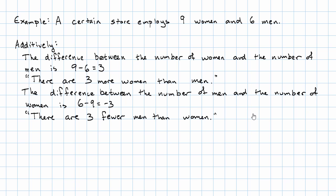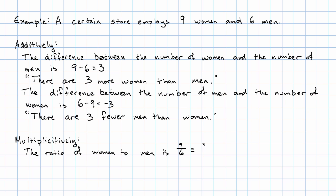How would we describe this multiplicatively? We would say that the ratio of the number of women to the number of men is the number of women over the number of men. Simplifying that fraction, this is three halves, or if we like mixed numbers, we can say one and a half.